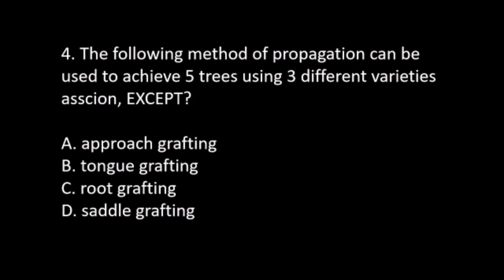Number 4. The following methods of propagation can be used to achieve 5 trees using 3 different varieties as scion, except: A. Approach grafting. B. Tongue grafting. C. Root grafting. D. Saddle grafting. The answer is C. Root grafting.